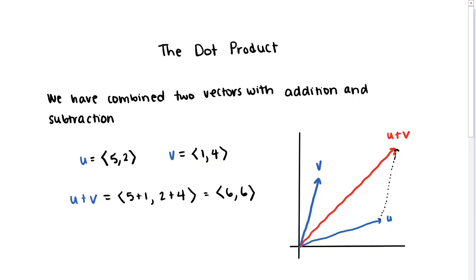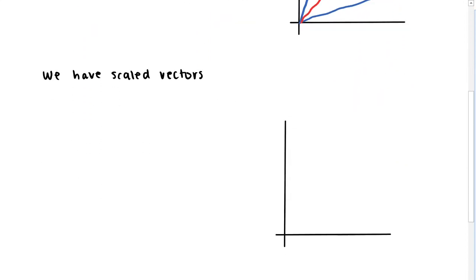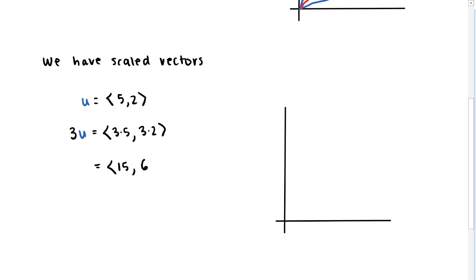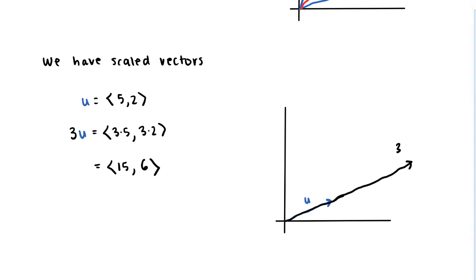A similar picture can be made for subtracting two vectors. We also talked about scaling vectors. If I take the same vector u equal to 5, 2, then the vector given by 3 times u just corresponds to multiplying the horizontal component by 3 and the vertical component by 3 as well. So we get this new vector 15, 6. If here is my vector u, then 3 times u is just stretching it out by a factor of 3 — this entire black vector is what we visualize when we say 3 times u.